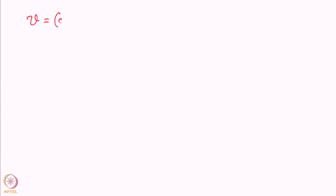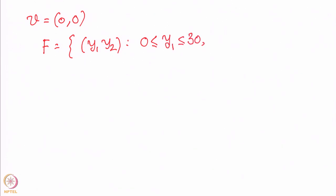Consider the disagreement vector v to be (0, 0), and let F be the set of all (y1, y2) such that 0 ≤ y1 ≤ 30 and 0 ≤ y2 ≤ 30 − y1. In other words, y1 + y2 ≤ 30. This is a situation where two players are going to divide 30 units among themselves — how do they split?